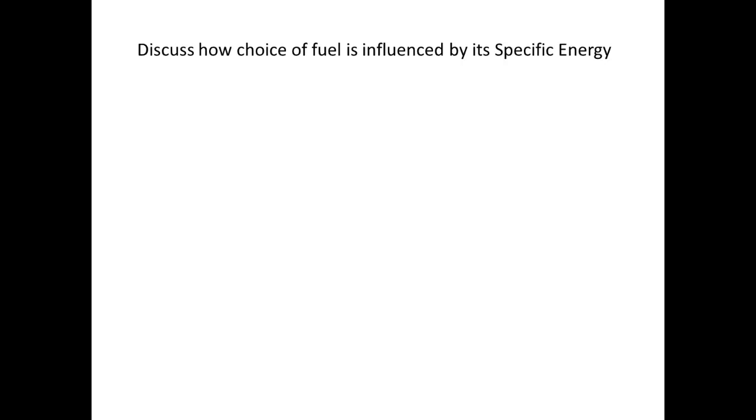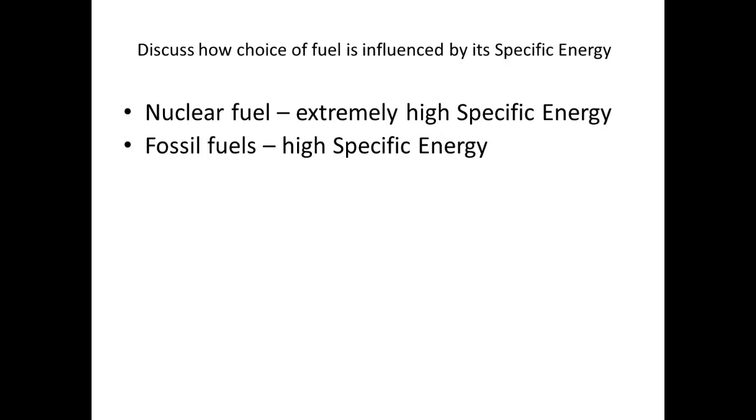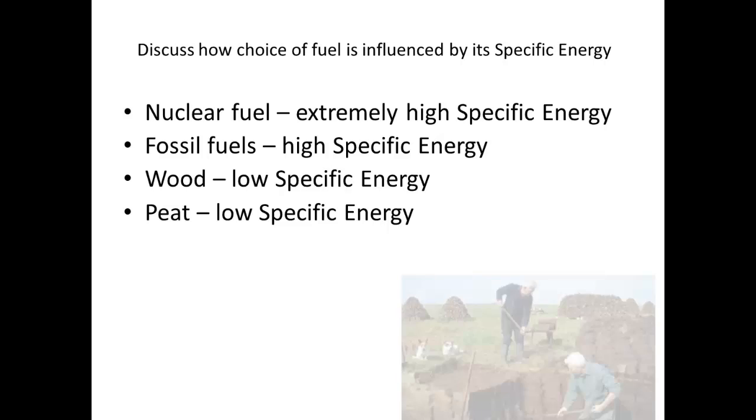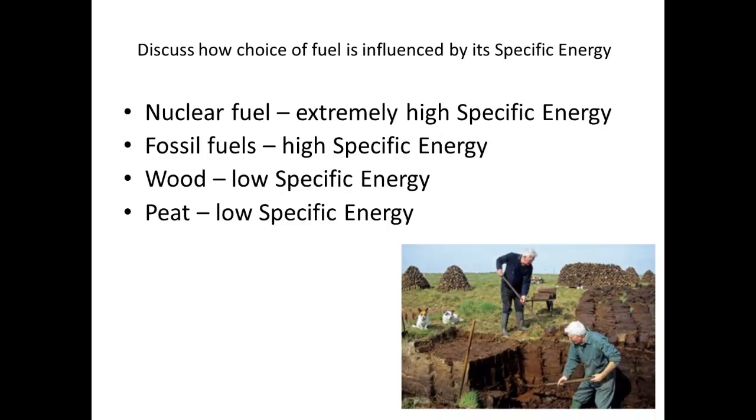Now we have to discuss how the choice of fuel is influenced by specific energy. Nuclear fuel has an extremely high specific energy and gives out a lot of energy. Fossil fuels have a fairly high specific energy. Wood, peat, and so on have low specific energies. Each kilogram gives us a low amount of energy. These boys basically need to produce twice as much mass of peat to give the same energy as coal. So you need two kilograms roughly of peat to give the same energy as one kilogram of coal.